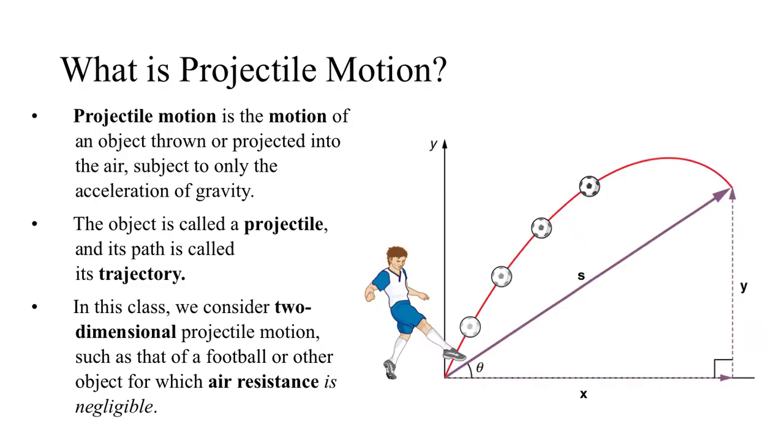Before we begin, what is projectile motion anyways? Well, projectile motion is simply the motion of objects thrown or projected into the air, subject to only the acceleration of gravity. This could be a soccer player kicking a soccer ball, a tennis player hitting a tennis ball, a basketball player shooting a free throw, an archer shooting an arrow, basically anything that travels through the air in two dimensions. So we call this object a projectile, and we call the path that it takes through the air its trajectory.